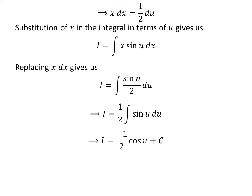We know the integral of sine of u with respect to u is minus cosine of u. So I is equal to minus half times cosine of u plus capital C. Capital C is the arbitrary constant of indefinite integral. Never forget to add this constant.